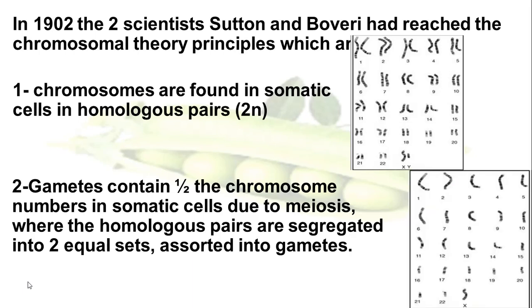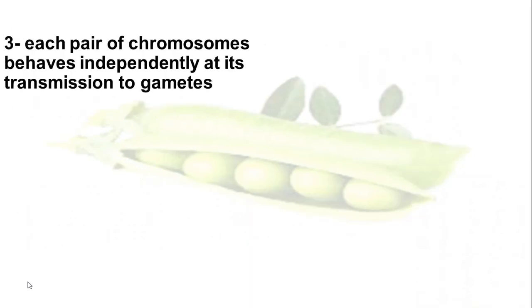So the gametes, or the sex cells, contain half the number of the somatic cells, which is 2N, so gametes contain only N. Each pair of chromosomes behaves independently at its transmission to gametes.